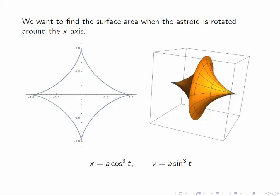So remember, the asteroid is given by, in parametric coordinates, by x equals a cosine cubed t, y equals a sine cubed t.